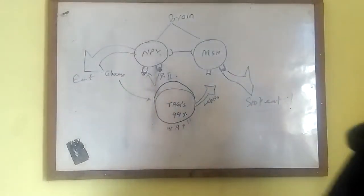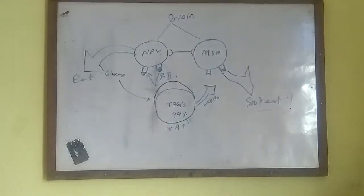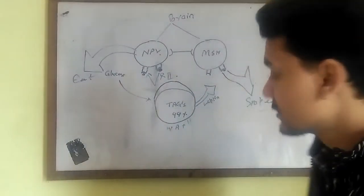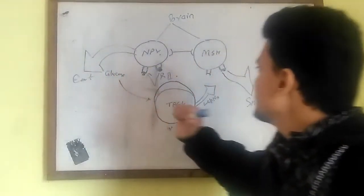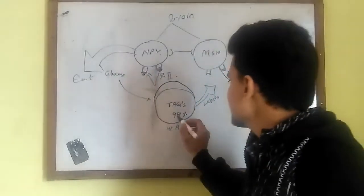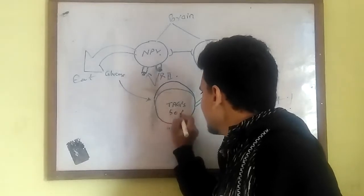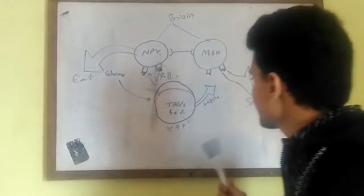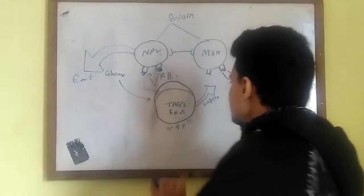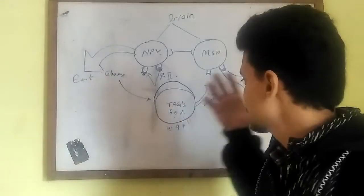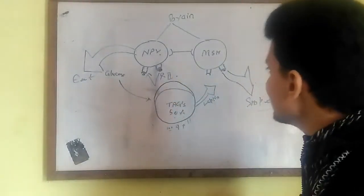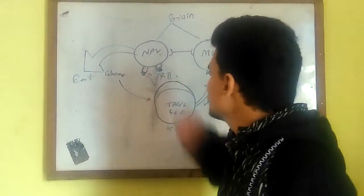The key point is that leptin alone cannot function as a pillar unless insulin is also induced in the body. If leptin were the only signal secreted from TAGs, the brain could get confused and the neuronal system would not function properly. When the adipose tissue is about 50% empty of TAGs, leptin binds to NPY to induce the 'eat' signal, indicating that more TAGs are needed to carry out beta-oxidation and oxidative phosphorylation.